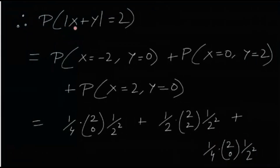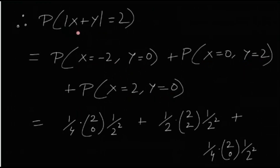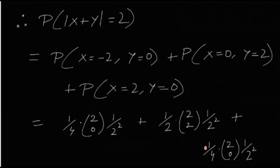P(|X + Y| = 2) occurs in exactly three cases: (1) X = −2, Y = 0; (2) X = 0, Y = 2; or (3) X = 2, Y = 0. Since X and Y are independent, we can easily calculate the probabilities for all three cases using the known distributions of X and Y.